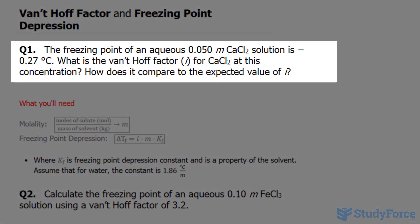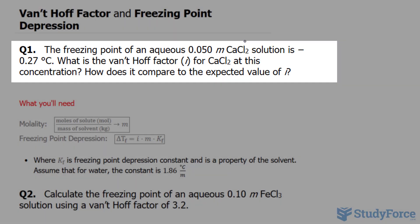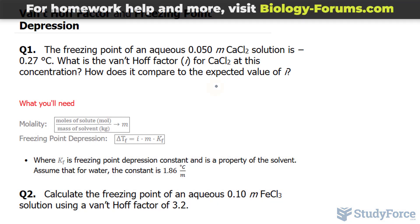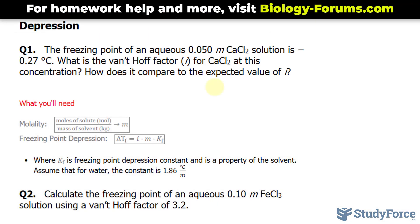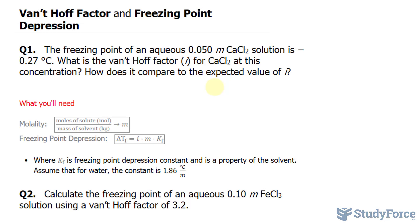Question 1 reads: The freezing point of an aqueous 0.050 molal calcium chloride solution is 0.27 degrees Celsius. Remember, calcium chloride is the salt that they use on streets to lower the freezing point of water. What is the Van't Hoff factor, i, for calcium chloride at this concentration? How does it compare to the expected value of i?